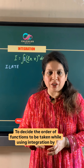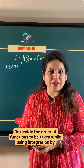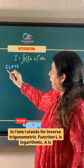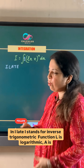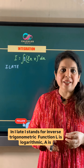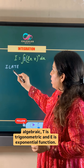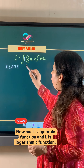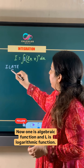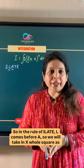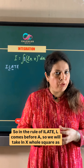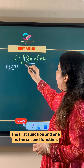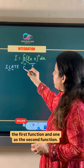To decide the order of functions when using integration by parts, we use the rule of ILATE. In ILATE, I stands for inverse trigonometric function, L is logarithmic, A is algebraic, T is trigonometric, and E is exponential function. Now 1 is an algebraic function and (ln x)² is a logarithmic function. In the rule of ILATE, L comes before A. So we will take (ln x)² as the first function and 1 as the second function.